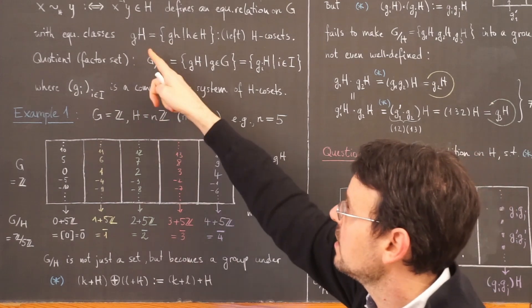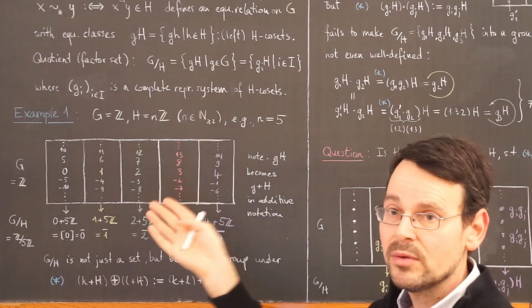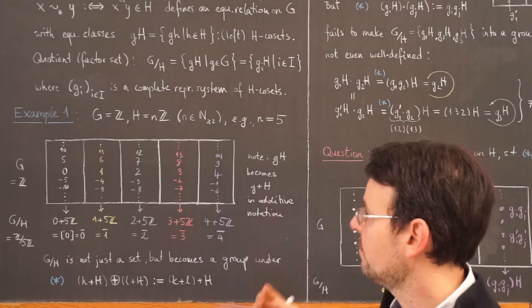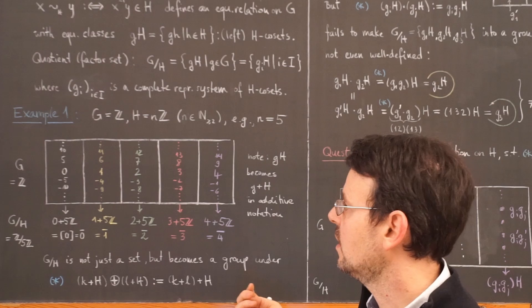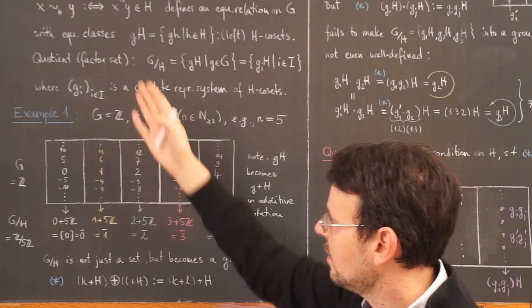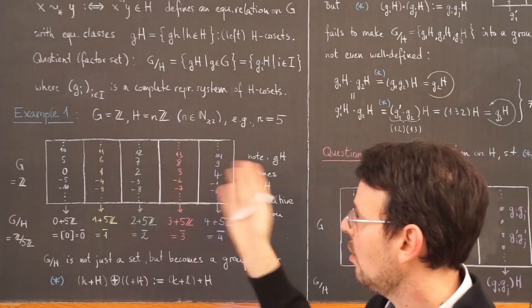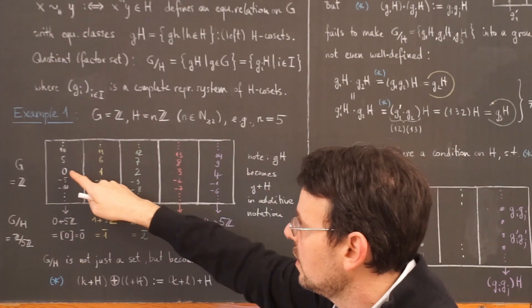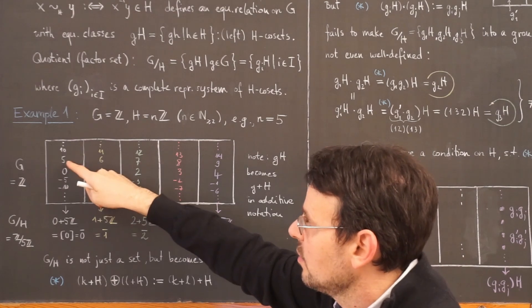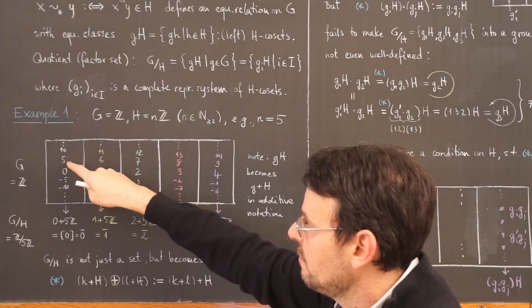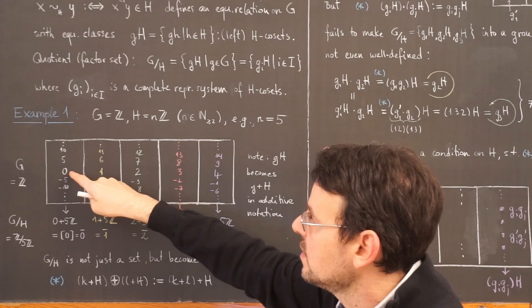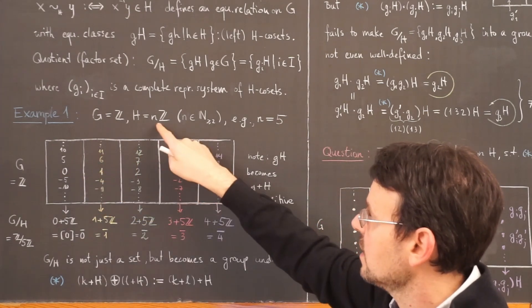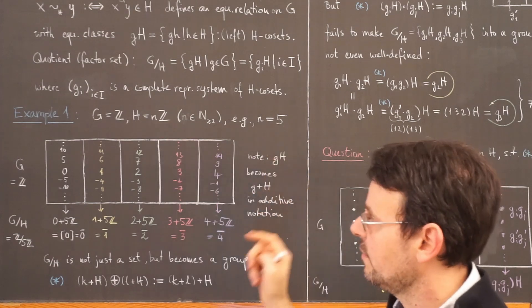The equivalence classes are the well known residue classes of calculating or doing modulo 5 calculations in the integers. And they form a partition of our whole group. So for example, we take 0. The next number that is equivalent to 0 would be 5, because 5 minus 0 is divisible by 5, hence lies in this subgroup here, 5z.